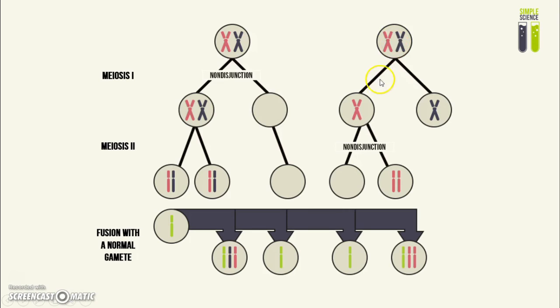The other way that it can happen is by non-disjunction in meiosis II. Here, meiosis I is happening normally and the chromosome number has been halved normally. However, in meiosis II, non-disjunction occurs.